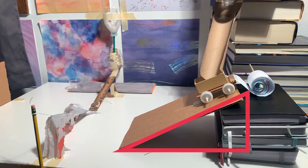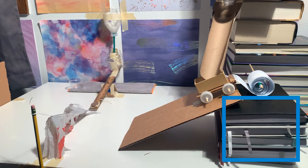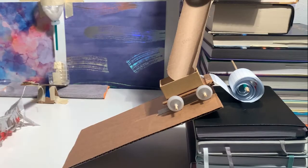An incline plane is a flat surface raised on one end that moves an object up or down with less force. Use the surface of a flat object and prop it up against another object to raise one end. Use this like a ramp to slide objects in different directions.